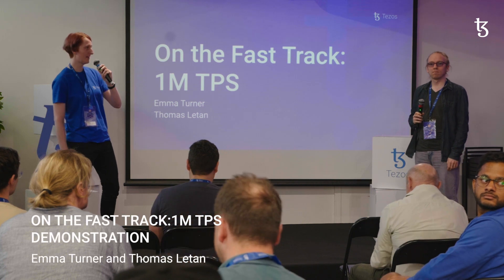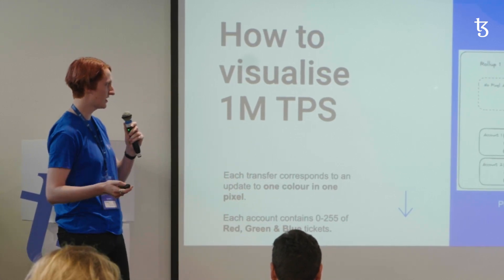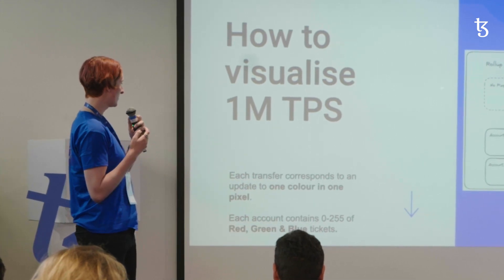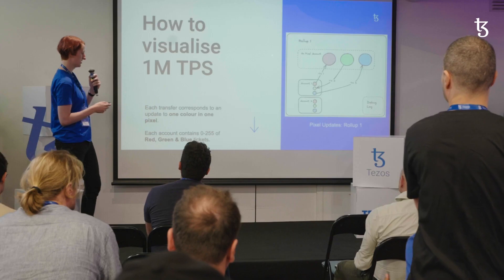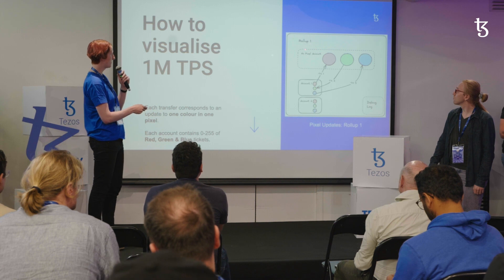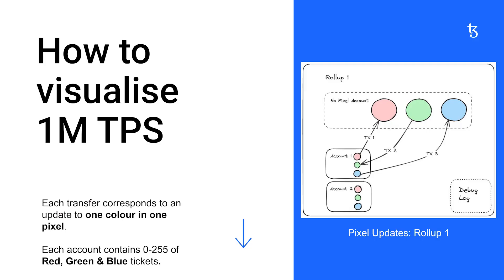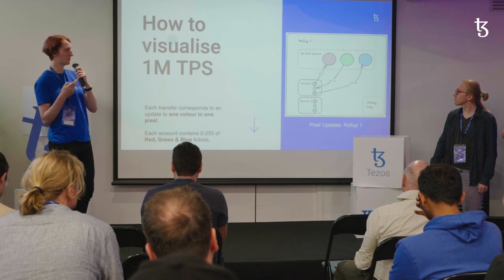We're going to talk about the million TPS that we've been working on. One of the first questions is how do you actually visualize it. We decided to make a very visual demonstration where every transaction updates a color in a pixel in an image. One rollup has an account with pools of three different assets — red, green, and blue — deposited as tickets from layer one, and every transaction moves a color either to or away from a pixel.